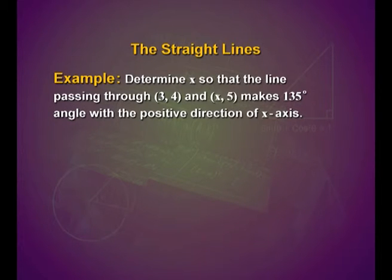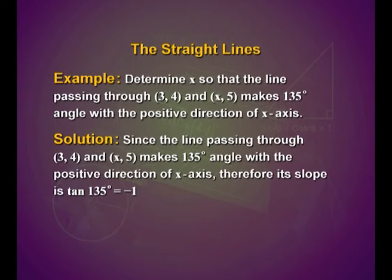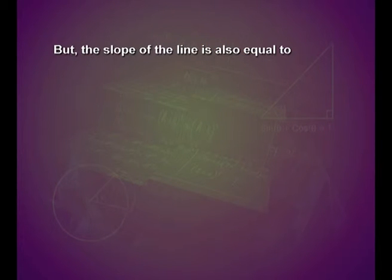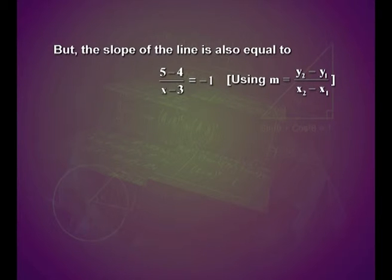Example: Determine x so that the line passing through (3, 4) and (x, 5) makes a 135 degree angle with the positive direction of the x-axis. Since the line makes 135 degrees with the positive x-axis, its slope is tan 135 degrees equals minus 1. But the slope is also equal to (5 minus 4) upon (x minus 3) equals minus 1. Using the slope formula, we get minus x plus 3 equals 1, so x equals 2.